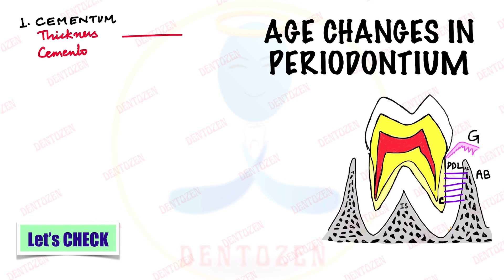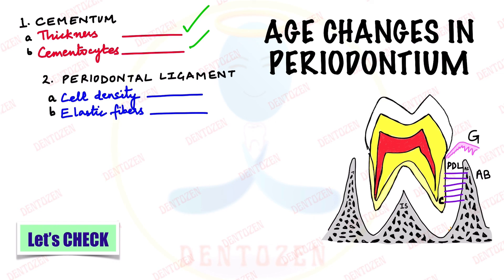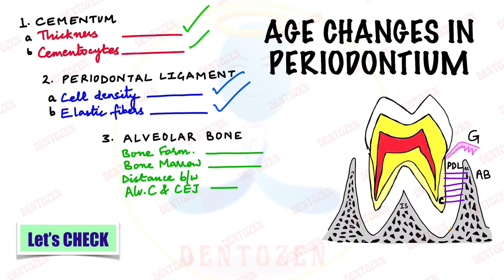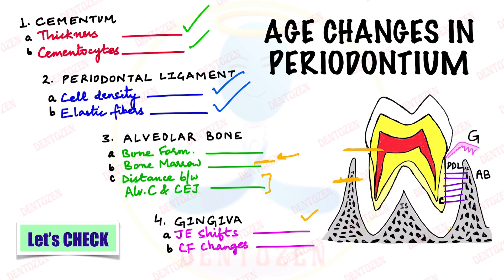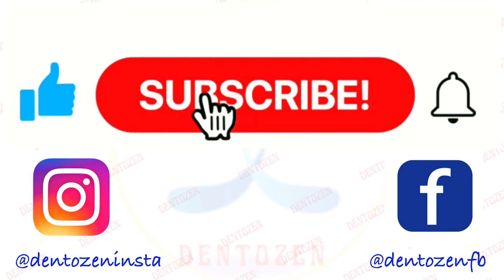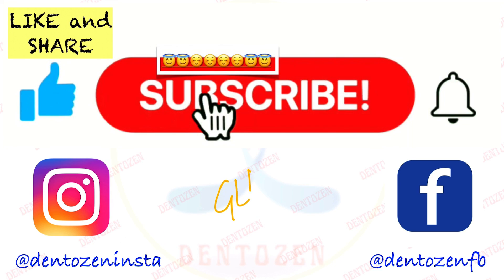Now let's check what you have learned. In cementum: what happens to its thickness and to cementocytes? In periodontal ligament: everything is decreasing, so predict what happens to cell density and elastic fibers. In alveolar bone: what happens to bone formation, which cells infiltrate the marrow, and what happens to the distance between alveolar crest and cementoenamel junction? In gingiva: which direction does the junctional epithelium shift, and what happens to collagen fibers? That is all for this video — keep watching, keep learning, keep smiling. Good luck for your exam!